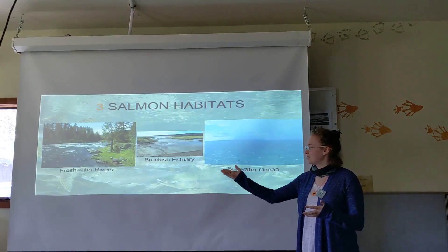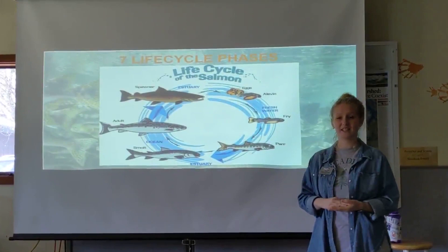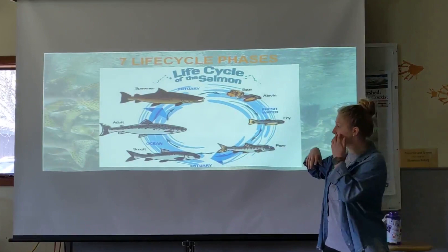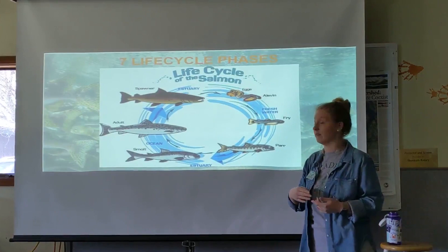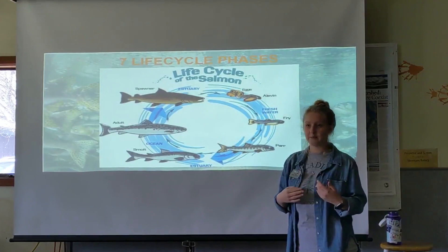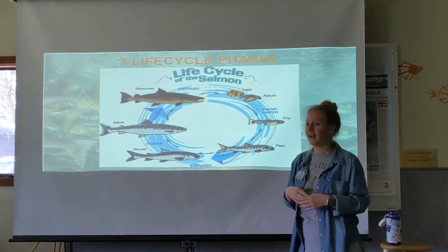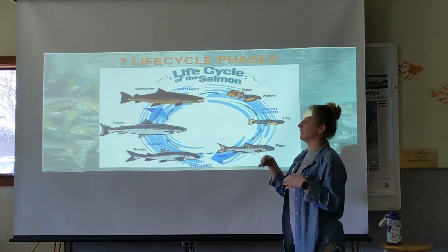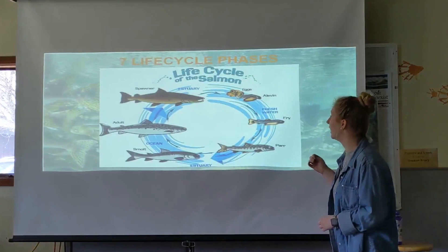The next topic is the seven life cycle phases of the salmon. It goes in a complete circle, so there's not really a specific beginning or end. Technically the first stage is the eggs, but we also need to talk about the spawner who lays them — it's like the chicken and the egg debate. The spawner lays the eggs, the eggs become the alevin, alevin become parr, parr become smolt, smolt become adults, and adults lead back into the spawner phase, ending their lives but leaving behind eggs to continue the cycle.